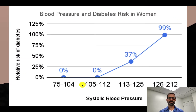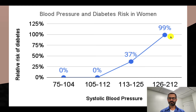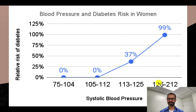For women, there was a similar increase. Compared to women whose systolic blood pressure was 75 to 104, as blood pressure increased, the relative risk of diabetes increased to as high as a 99% increased relative risk of developing diabetes during the follow-up period for those with a systolic blood pressure of 126 or greater.